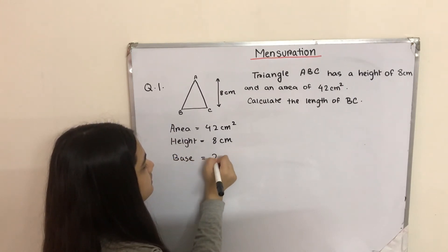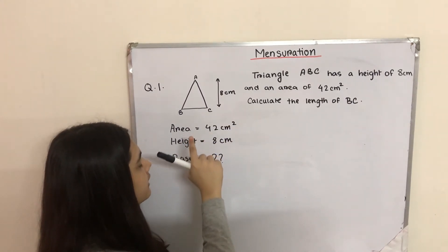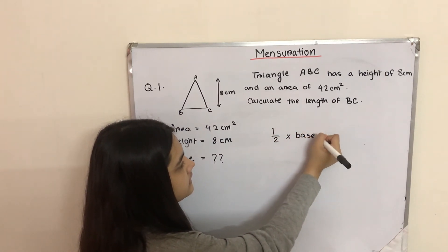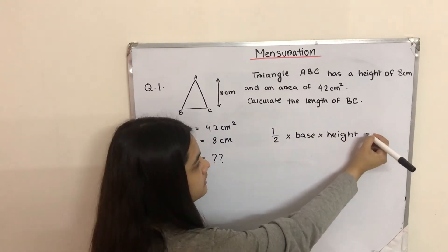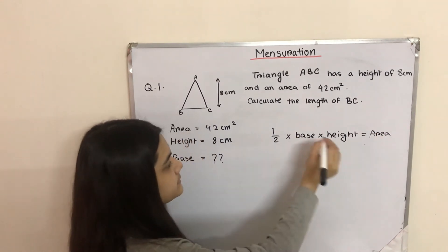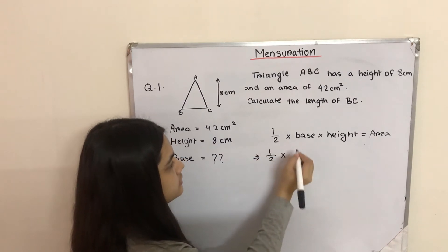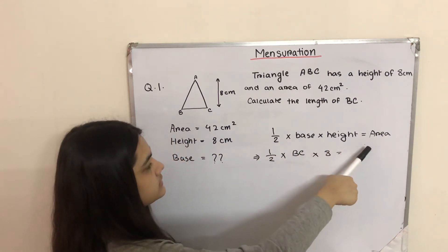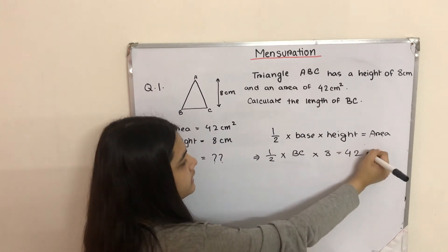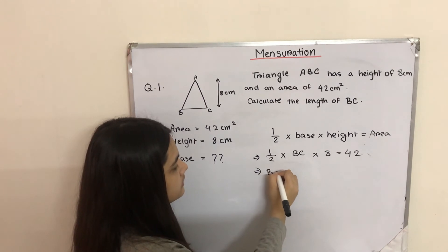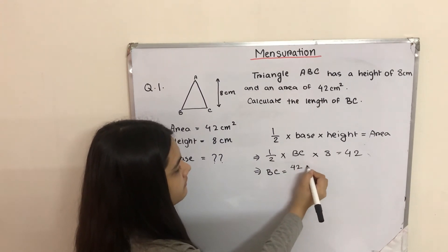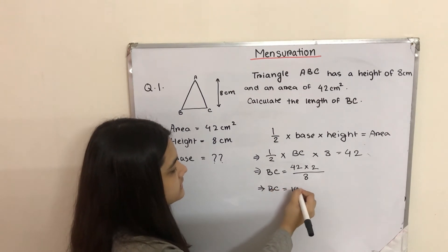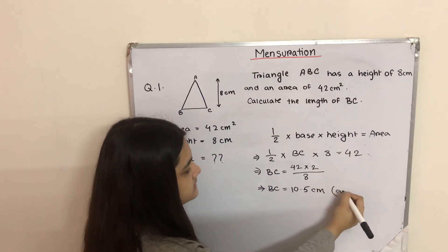Here BC is the base, so we need to find the base which is unknown. We know the area and we know the height, so we can use the formula: half into base into height equals area. Substituting: half × BC × 8 = 42 cm². Taking the 2 to the other side: BC = 42 × 2 ÷ 8 = 10.5 centimeters.